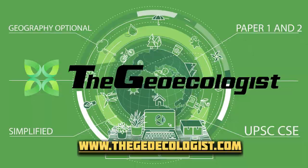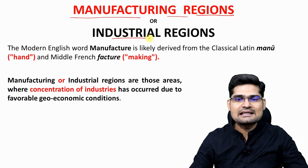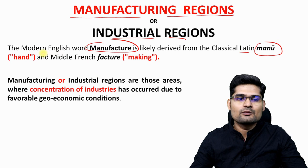Let's elaborate and learn the concept of manufacturing regions or industrial regions. Beginning with the etymology — the modern English word 'manufacture' comes from classical Latin 'manu' meaning hand, and middle French 'facture' meaning making. So basically, the word manufacture means handmade, made by human hands.